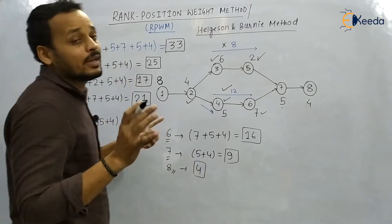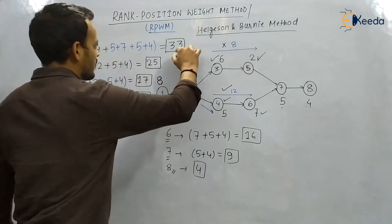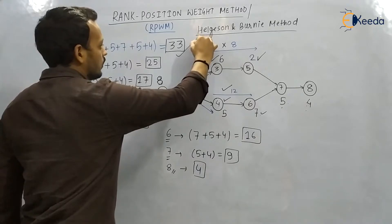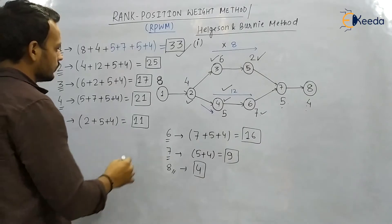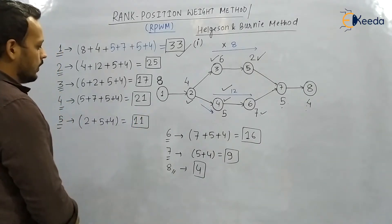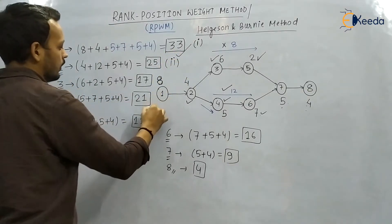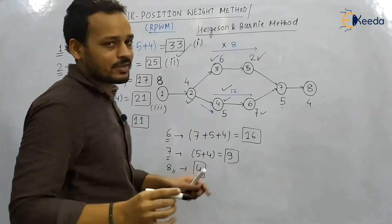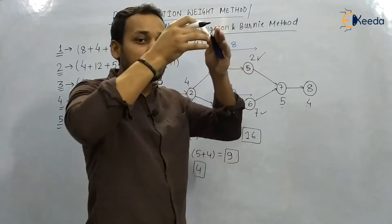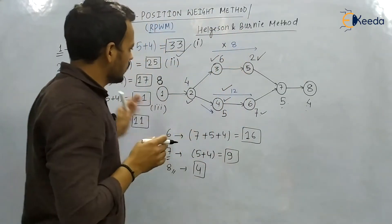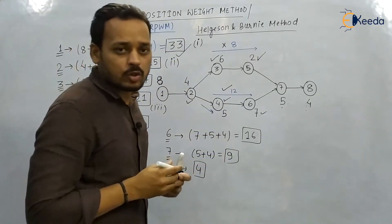Now arrange the elements in decreasing order of their positional weight. The highest is 33 — element 1 goes first. The second highest is 25 — element 2 goes second. In this way, arrange the work elements from highest to lowest positional weight.